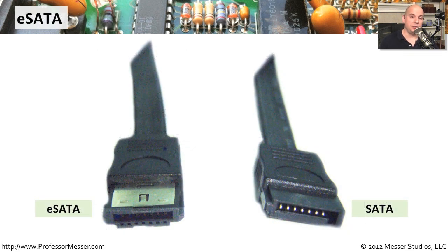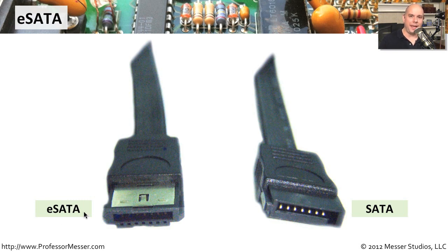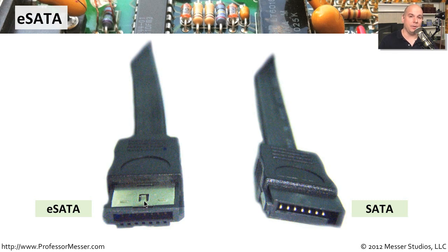In a previous video, we talked about common ways to connect storage devices on the inside of a computer, and one of those was SATA — the Serial AT Attachment Interface. There is also a standard of SATA designed for external storage devices called eSATA, where the E stands for external Serial AT Attachment Interface. The connections for SATA and eSATA are different, so you can't use the same cable for both internal and external. The protocols used between SATA and eSATA are identical, which makes it very simple for manufacturers to create and manage these devices whether they use an external or internal SATA connection.